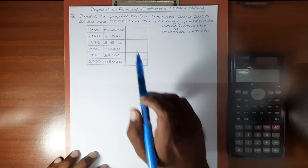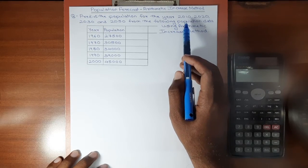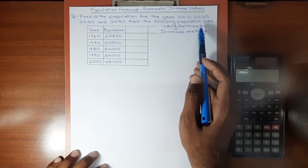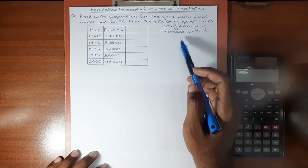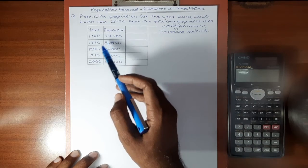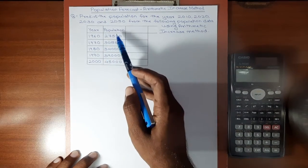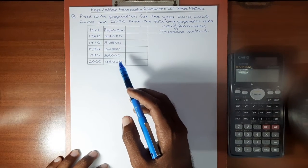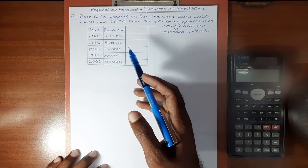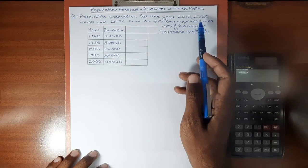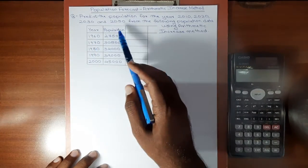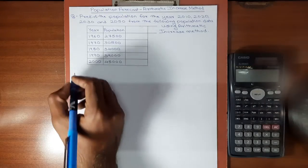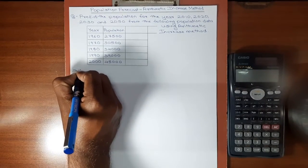The question given here is: predict the population for the years 2010, 2020, 2030, and 2050 from the following population data using the arithmetic increase method. We have the year and the population from 1960 to 2000, and we have to calculate the probable population in those years using this data. First, let's go through the formula of the arithmetic increase method.